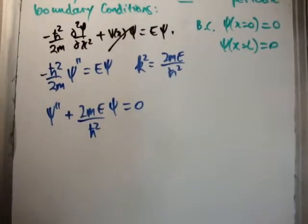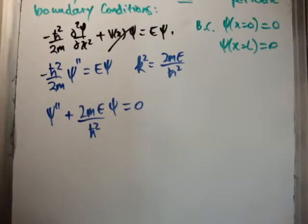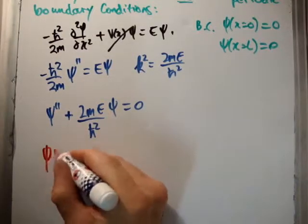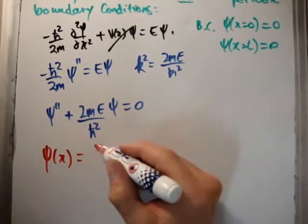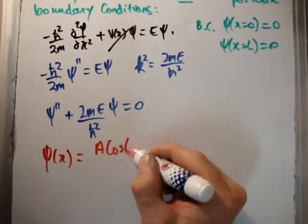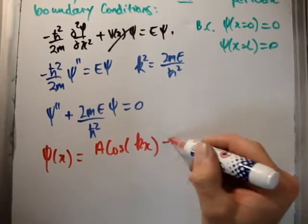Now if you don't know how to solve this, look at my videos on solving the differential equations. You'll find that this is pretty straightforward. The solution is cos and sin. So that means the wave function in one dimension is A cos kx plus B sin kx.